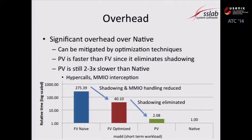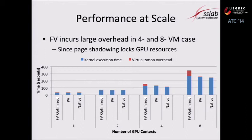Next, we show performance at scale. We ran a heavy workload on one, two, four, and eight VMs sharing a single GPU via GPU VM. FV incurs larger overhead with four and eight VMs compared to fewer VMs. This overhead is caused because page shadowing locks GPU resources in our prototype.